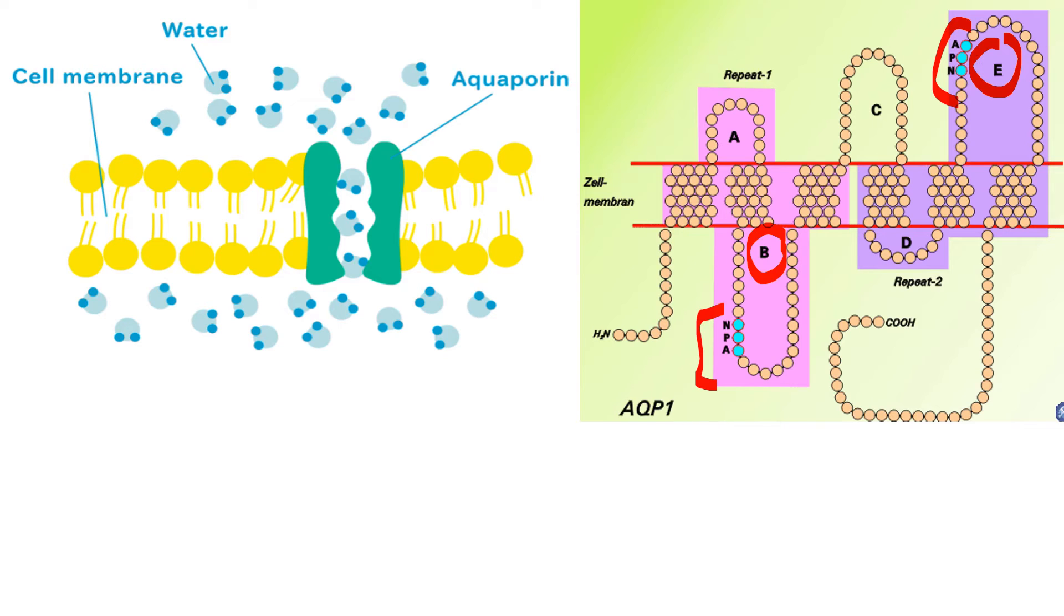This makes the water channel narrow in the middle and wider at the ends. It contains an aromatic or arginine selectivity filter, which is a cluster of amino acids that help to bind water molecules and exclude other molecules that may try to enter the pore.